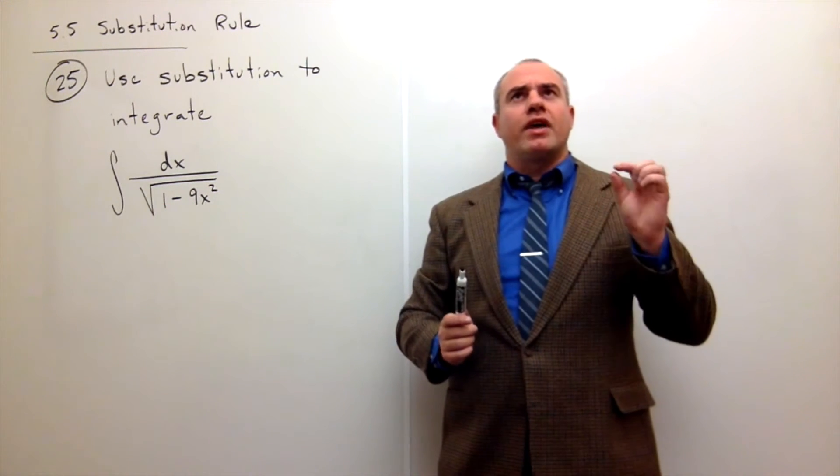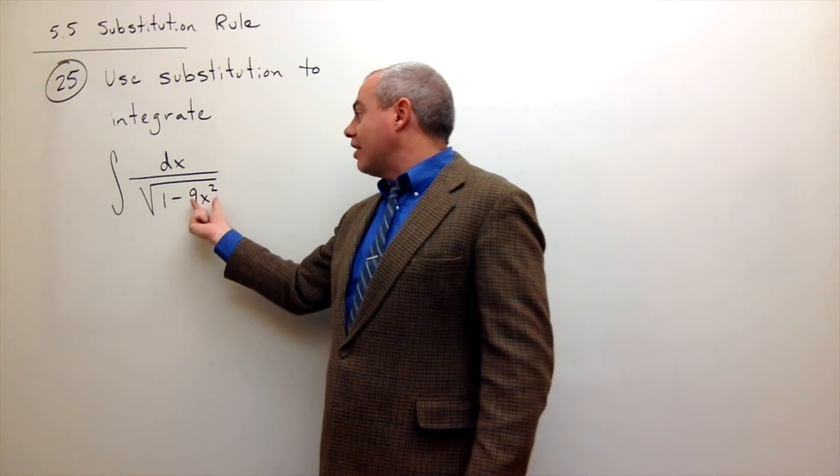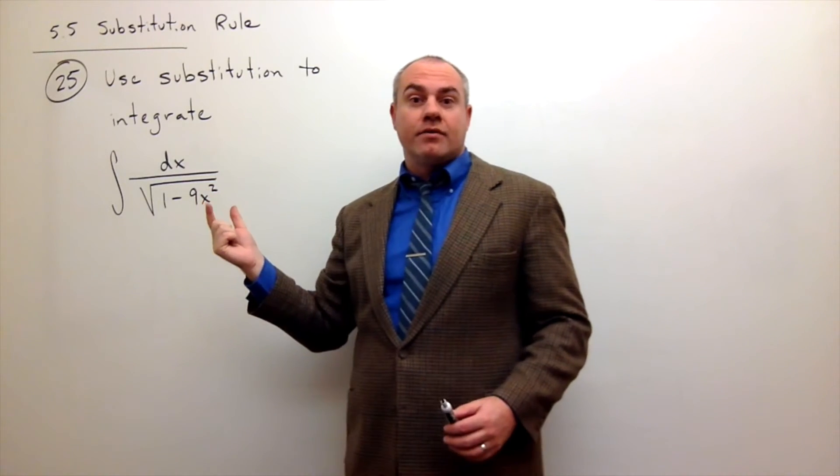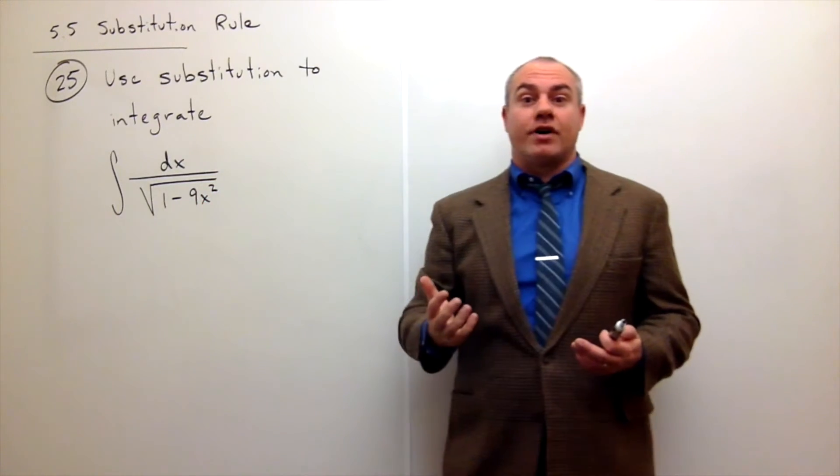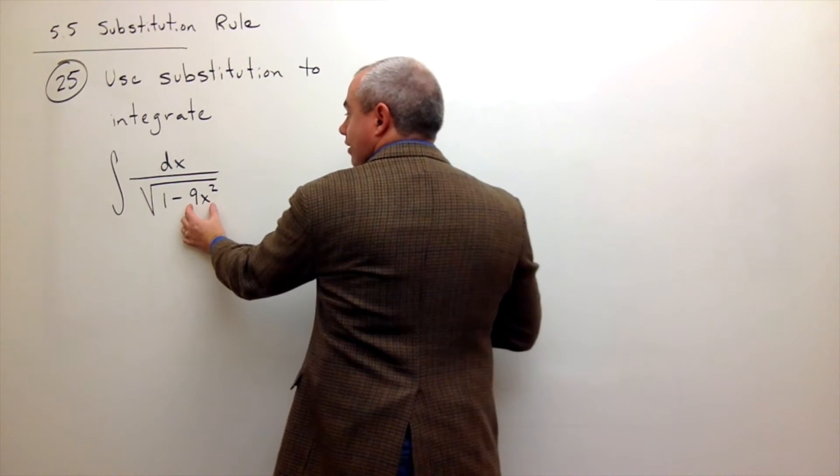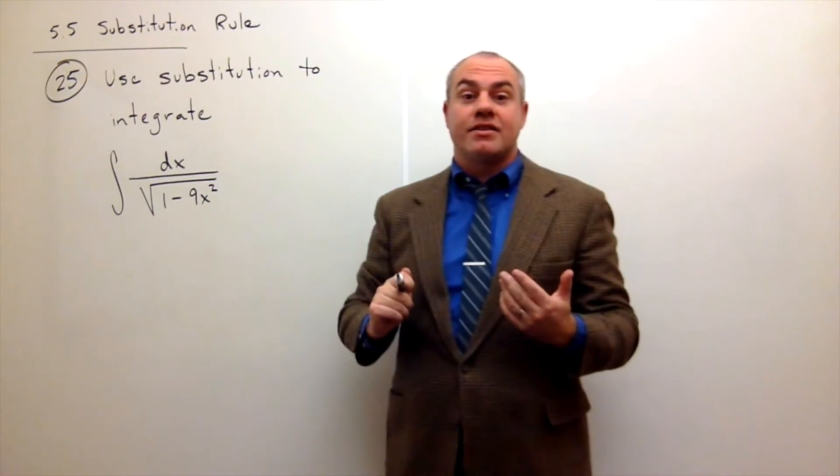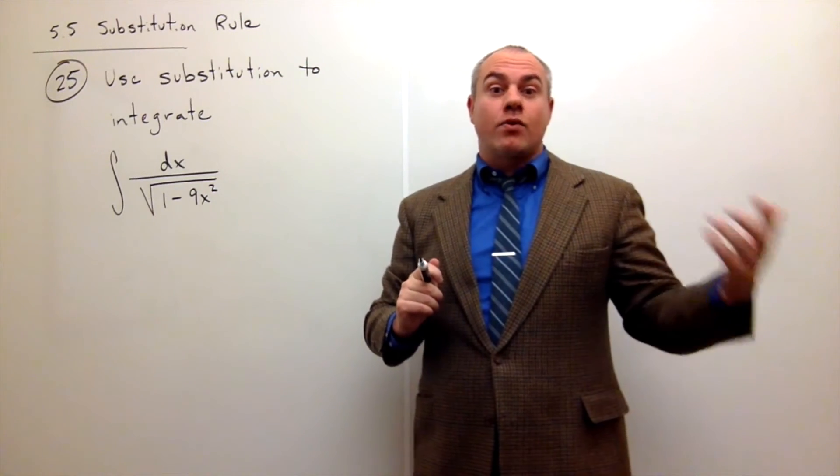So I should think, how can I make this look more like just a 1 minus u squared? And then I could use sine inverse. So what I want to do is say, is this something squared? And the answer is, yeah, that is something squared. It's a 3x quantity squared.